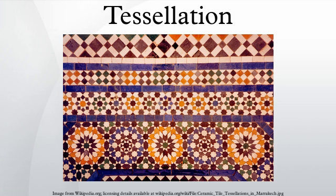An isohedral tiling is a special variation of a monohedral tiling in which all tiles belong to the same transitivity class — that is, all tiles are transforms of the same prototile under the symmetry group of the tiling. If a prototile admits a tiling but no such tiling is isohedral, then the prototile is called anisohedral and forms anisohedral tilings. A regular tessellation is a highly symmetric, edge-to-edge tiling made up of regular polygons all of the same shape. There are only three regular tessellations: those made up of equilateral triangles, squares, or regular hexagons. All three of these tilings are isogonal and monohedral. A semi-regular tessellation uses more than one type of regular polygon in an isogonal arrangement. There are eight semi-regular tilings, which can be described by their vertex configuration.